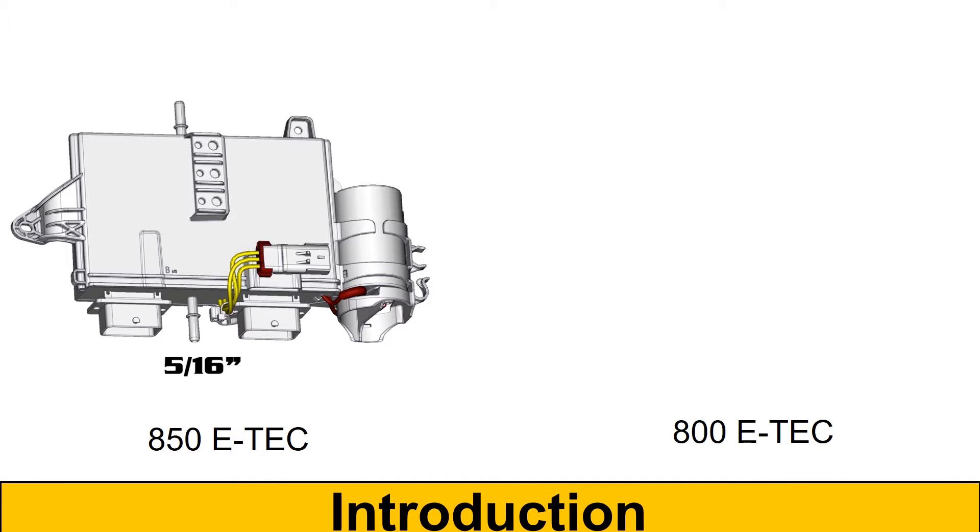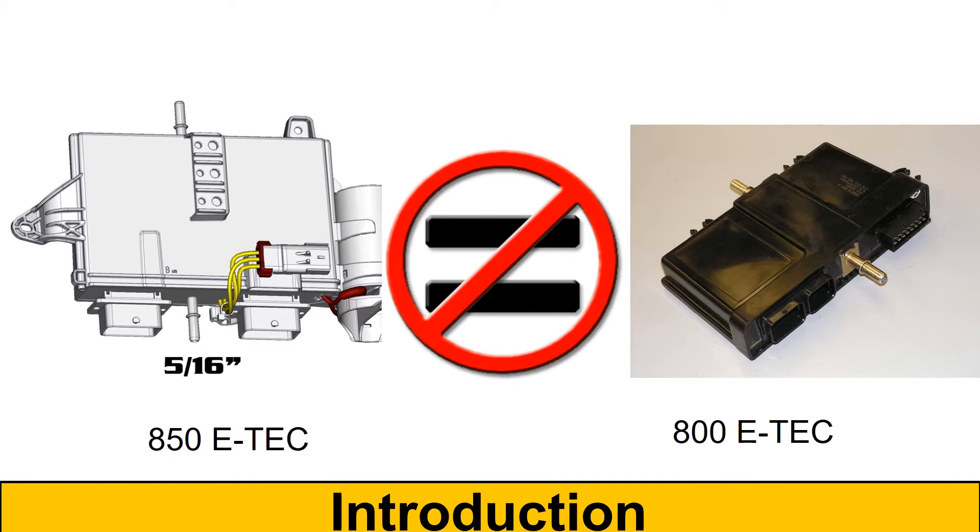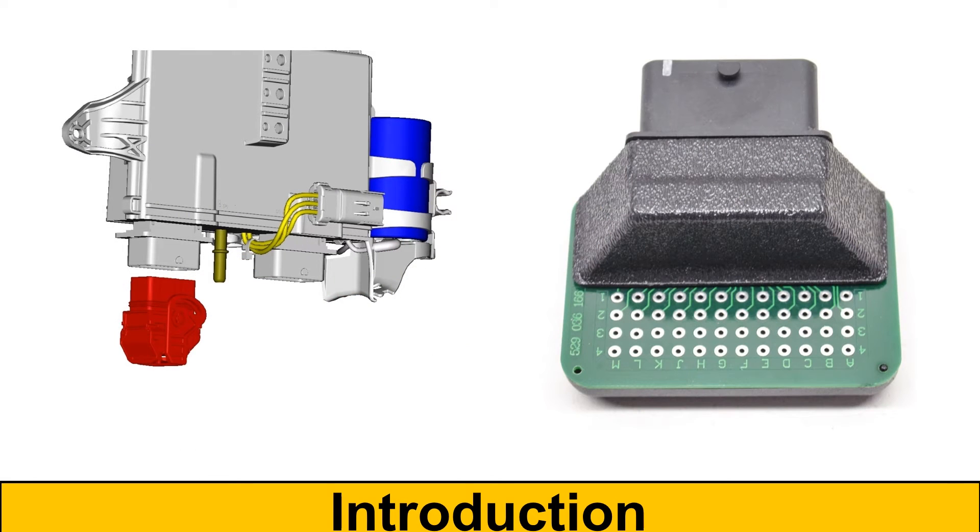Here are the key points of the 850 eTEC's ECM. It has two connectors, a 5/16th of an inch fuel line connection. It's not interchangeable with other eTEC ECMs. The connectors are compatible with the standard ECM adapter service tool.